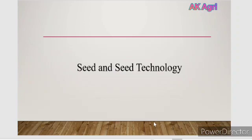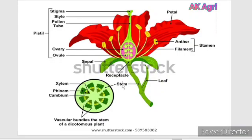Before we start, let us know about what are the four main parts of a flower. The first part is a green leaf-like structure called as sepal. The group of sepal is calyx. The second part is petal. The group of petal is corolla.